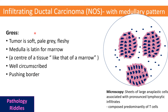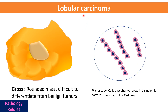Infiltrating ductal carcinoma with medullary pattern — 'medulla' is a Latin term for marrow. The tumor is grossly soft, pale gray, and fleshy, and is well-circumscribed with pushing borders, unlike the typical infiltrating borders. Microscopically, there are sheets of large anaplastic cells associated with abundant lymphocytic infiltrate, predominantly composed of T lymphocytes.